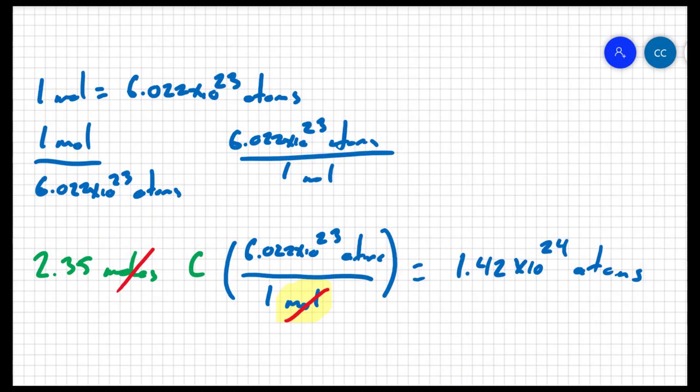We're going to do the exact same process we did with the last problem. We're going to start with the concept that 1 mole is equivalent to 6.022 times 10 to the 23 atoms. And I could write 1 mole over 6.022 times 10 to the 23 atoms, or 6.022 times 10 to the 23 atoms over 1 mole.